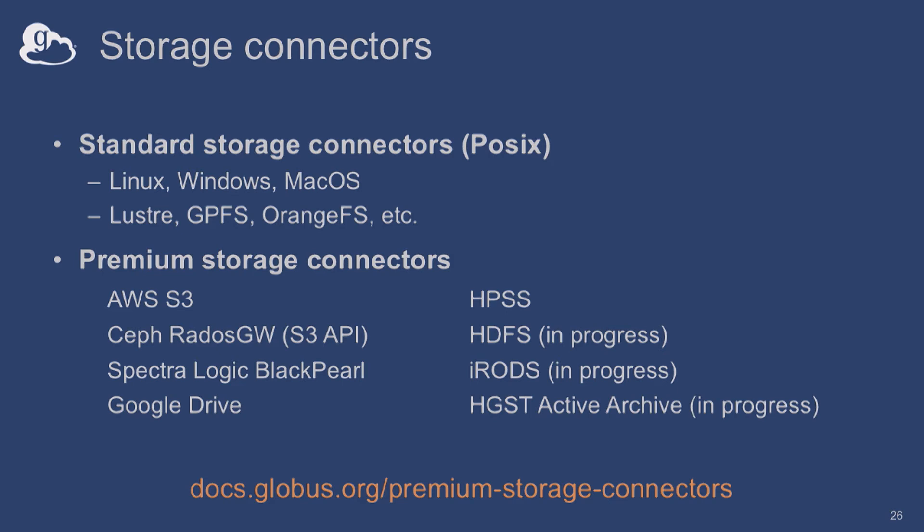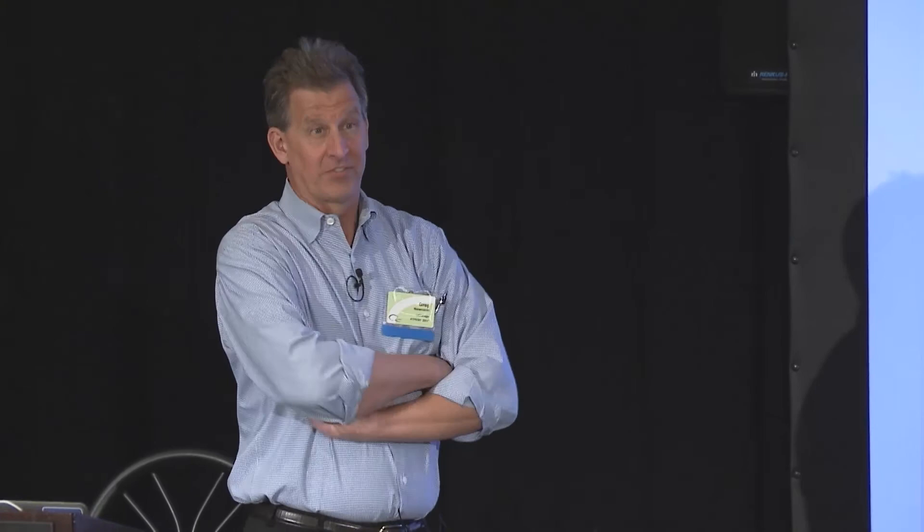Question: for premium storage connectors, do I only need access to a facility that has that connector? You would need that facility to have Globus Connect server installed with that connector — it's where the Globus Connect server instance is installed. Globus Connect server does all the work, runs on Linux in all popular flavors. We do a tutorial where we give everybody AWS instances and they actually install Globus Connect server — in minutes they have a Globus endpoint up and running on an Amazon instance.